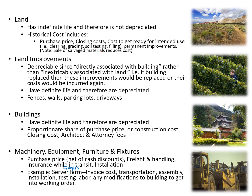Machinery, equipment, furniture and fixtures — sometimes known as fixed assets. You include the purchase price net of any cash discounts, freight, handling, insurance while in transit, and any installation costs. For example, Google has server farms, which are the large servers on which it maintains its data. You include the invoice costs, the transportation, the assembly, any installation, any testing, and any modifications you have to make to the building in order to get that server farm in order or to use the servers. The general rule is anything that it takes to get it operable and useful so it can be revenue-producing, you include in its cost.